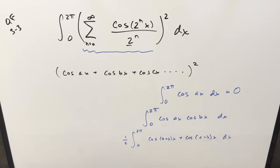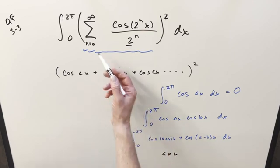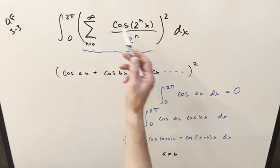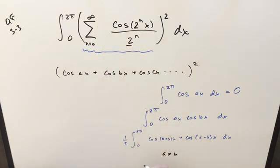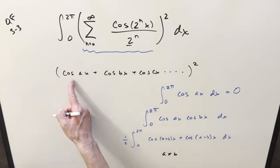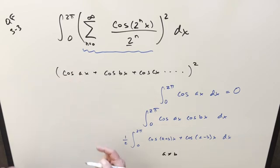Now, there is one important condition on this. We want a not equal to b. And that's going to be no problem because in our series, right, this 2 to the n is just going to keep growing to infinity. So we're never going to have two terms that are exactly the same unless we actually have the same, unless we actually have the square term where we have cosine ax times cosine ax. This condition is always going to be true.